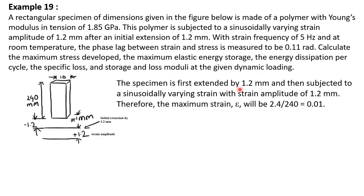The specimen is first extended by 1.2 millimeter, and then subjected to a sinusoidally varying strain with a strain amplitude of 1.2 millimeter — 1.2 millimeter on the positive side and 1.2 millimeter on the negative side. Therefore, the maximum strain epsilon will be given as 2.4 over 240, because the total extension is 1.2 plus 1.2, which makes 2.4. This is the maximum extension and the initial length is 240 millimeter. So the maximum strain is 2.4 over 240, which is equal to 0.01.